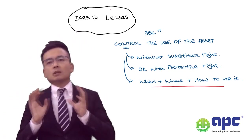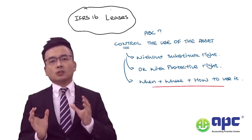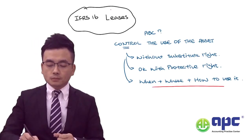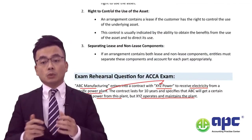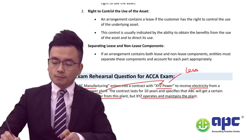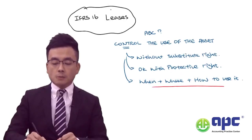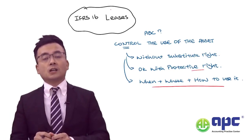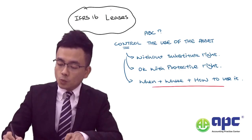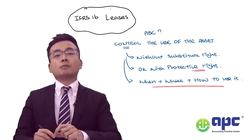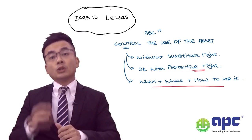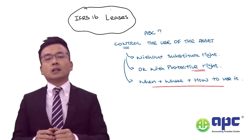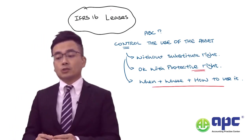However, in certain contracts, terms and conditions may include protective rights designed to protect the rights of XYZ Power — the lessor. These protective rights may determine periods in which we cannot use the asset. Even so, the existence of protective rights does not prevent us from controlling the asset. Protective rights are not really considered in determining whether an arrangement contains a lease.